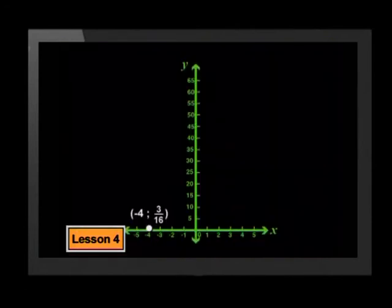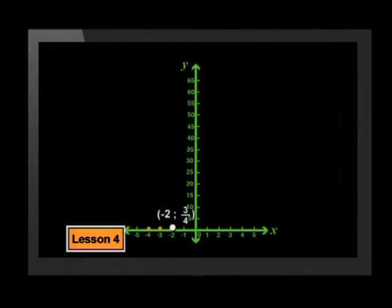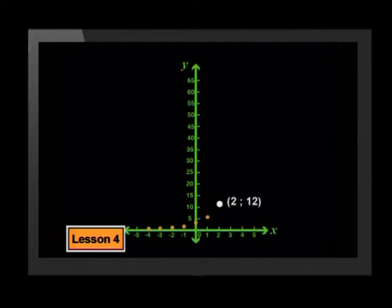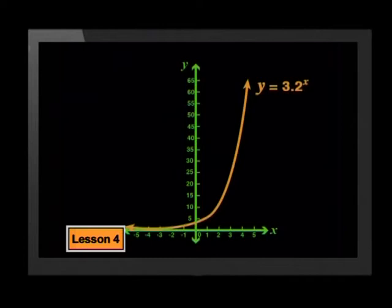The point negative 4, 3 sixteenths is about here. Negative 3, 3 eighths is here. Negative 2, 3 quarters. Negative 1, 3 halves. Then I can join the points to get the graph. Now let's compare this graph with the parent graph. Our conjecture was right — the graph has stretched vertically away from the x-axis by a factor of 3.